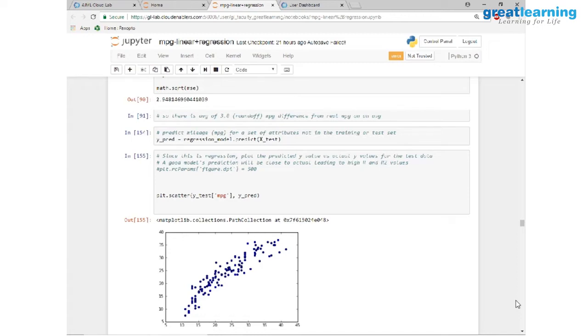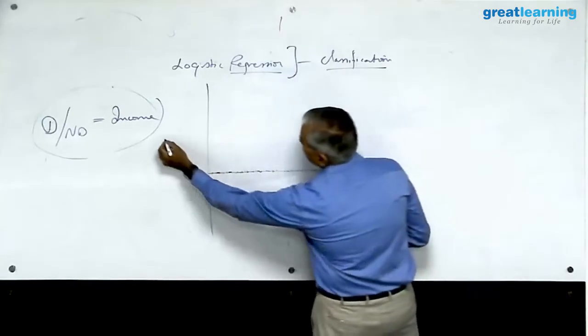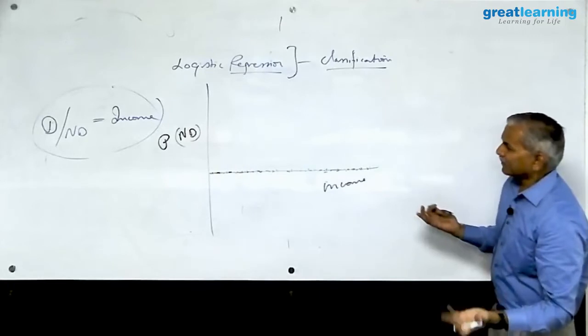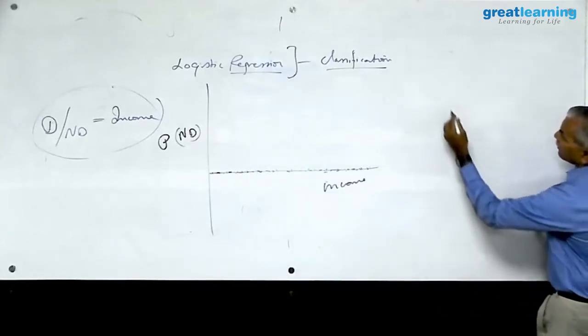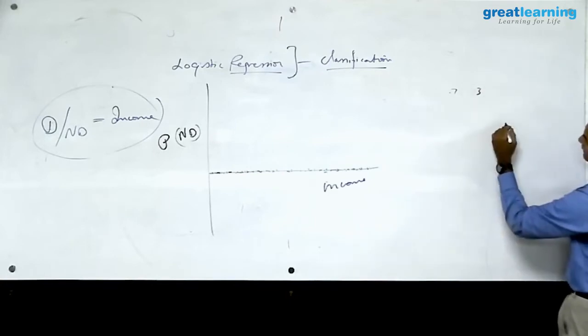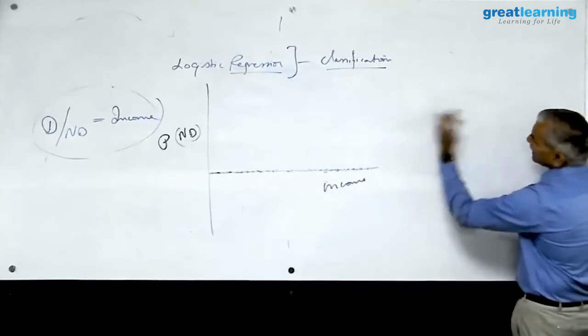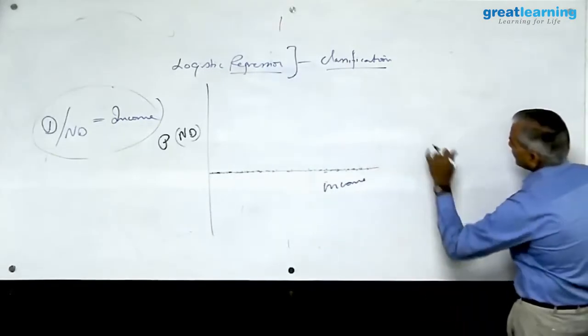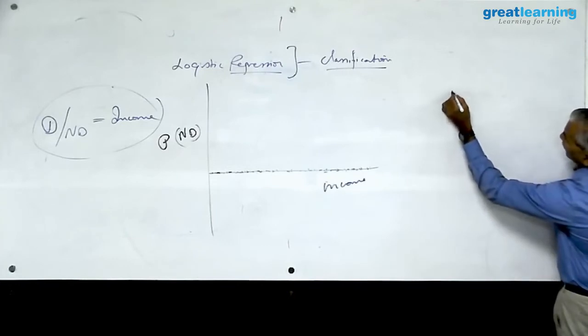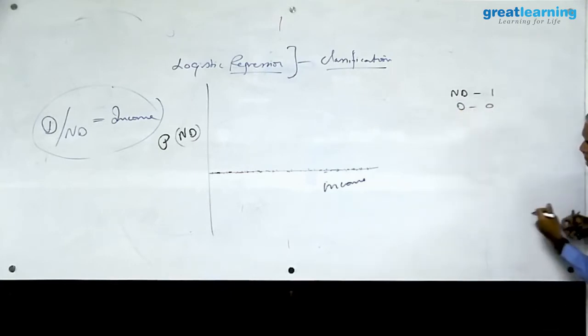I say, okay, let me build a model where this axis represents probability of non-default. You could have taken a defaulter also. So if probability of somebody being non-default is 0.7, then probability of him being default will be 0.3 because probability has to come to 1. So you can take any class. I am taking non-default. And the other thing which I do here is, all the non-defaulters I am going to encode them as 1, all the defaulters I am going to encode them as 0. Once again, it does not have to be this way. It can be the other way also.